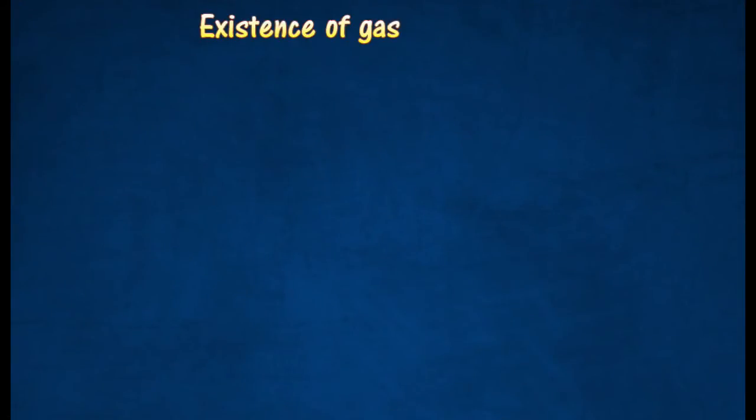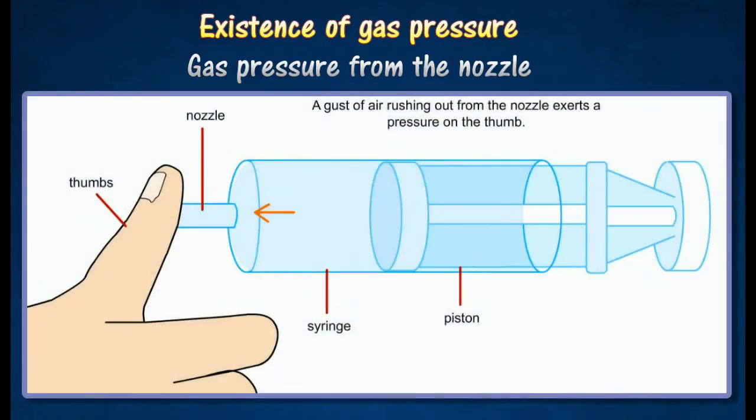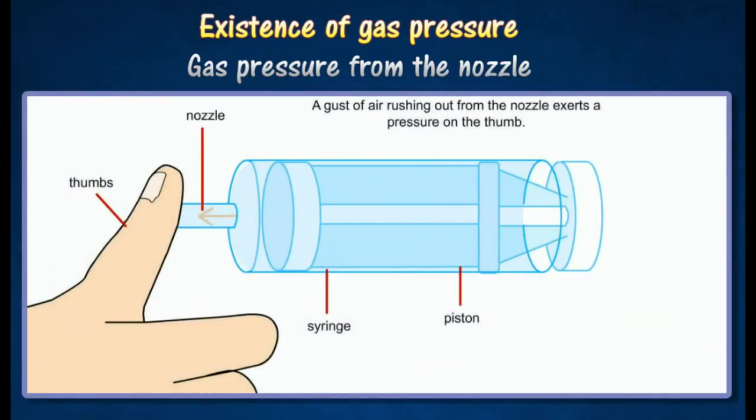Here are a few examples to show the existence of gas pressure. A gust of air rushing out from the nozzle exerts a pressure on the thumb. Gas pressure is produced by fast-moving gas molecules.